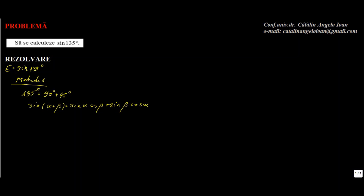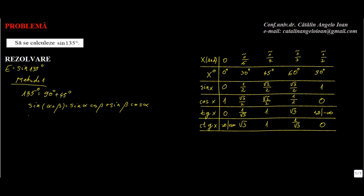Să ne amintim valorile funcției trigonometrice pe unghiurile elementare. Sinus de 135 de grade egal cu, în loc de alfa îl vom lua pe 90 de grade, în loc de beta pe 45 de grade. Egal cu sinus de 90 de grade ori cosinus de 45 de grade plus sinus de 45 de grade ori cosinus de 90 de grade. Cât este sinus de 90 de grade? Este 1, deci egal cu 1 ori cosinus de 45 de grade, care este radical din 2 pe 2, plus radical din 2 pe 2 ori cosinus de 90 de grade, care este 0. Prin urmare, egal cu radical din 2 pe 2.